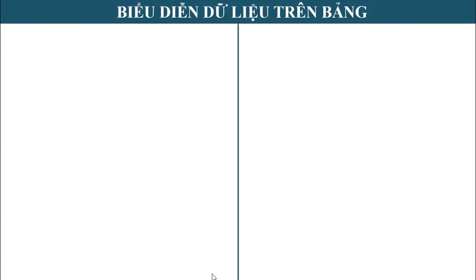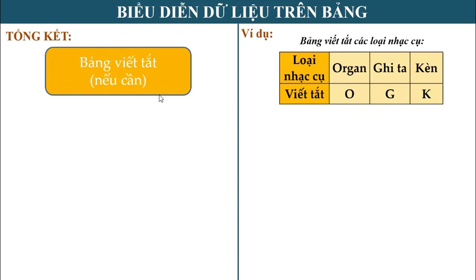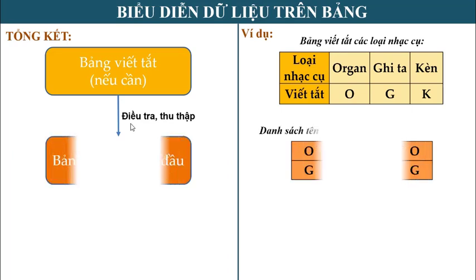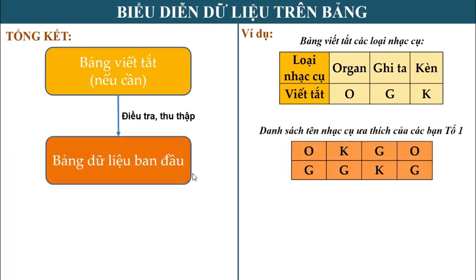Như vậy, muốn thống kê một vấn đề nào đó, thông thường các bạn thực hiện 3 bước. Bước thứ nhất: lập bảng viết tắt nếu cần. Sau đó điều tra, thu thập để lập nên bảng dữ liệu ban đầu. Thực hiện đếm số lượng từng loại, các bạn sẽ lập được bảng thống kê.